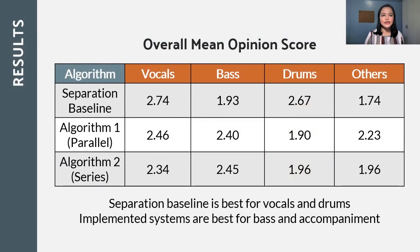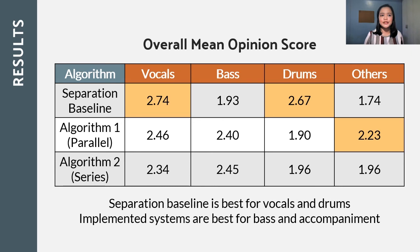Among the three algorithms, the baseline is more preferred in separating the vocals and drums source, the parallel implementation gives the best score for the other source, while the series implementation works well in separating the bass source.